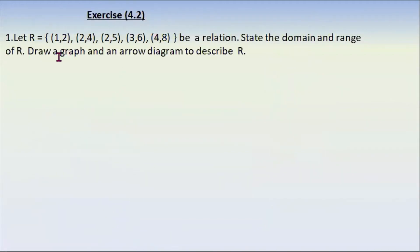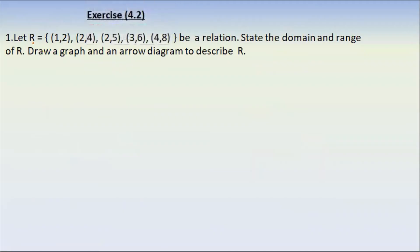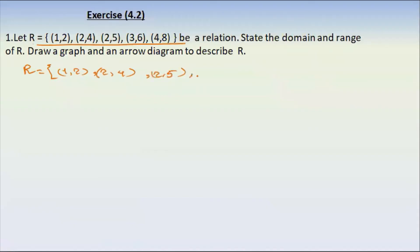Exercise: Let R equal to the set — this is the graph. The ordered pairs are: (1,2), (2,4), (2,5), (3,6), (4,8). This is the graph of the graph. That is the graph.